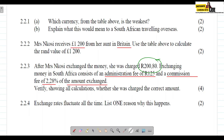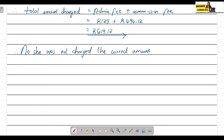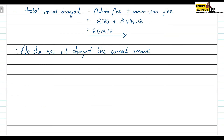The question asks us to verify whether she was charged the correct amount. We were told she was charged R280. Based on our calculations, the correct charge should be R619.12, so no — she was not charged the correct amount. You get marks for multiplying by the 2.28%, adding the admin fee, stating the total, and concluding that she was not charged correctly. That is a total of four marks.